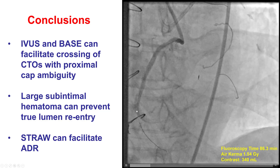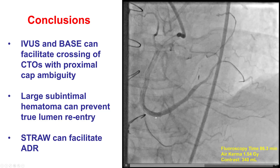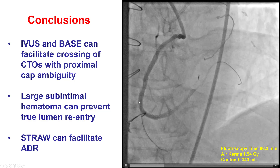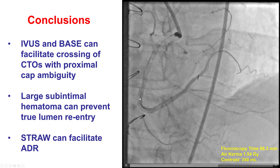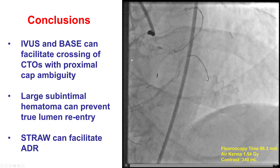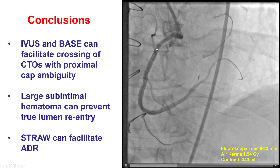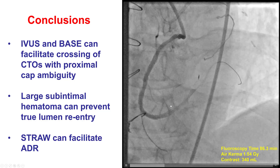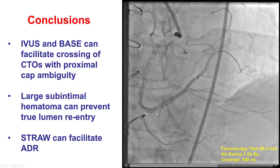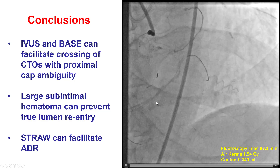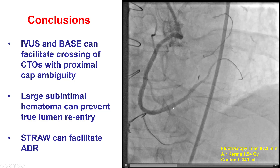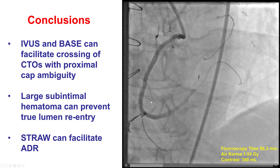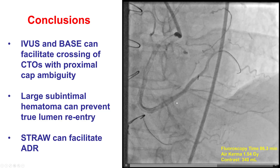The next challenge was that of a large subintimal hematoma. Despite using a guide extension to minimize formation of the hematoma, the solution ended up being getting a balloon into the right coronary artery to block antegrade flow of blood, then advancing both the stingray and a microcatheter. We aspirated through the microcatheter, decompressing the hematoma and re-expanding the distal true lumen, followed by entry using the double-blind stick and swap technique.